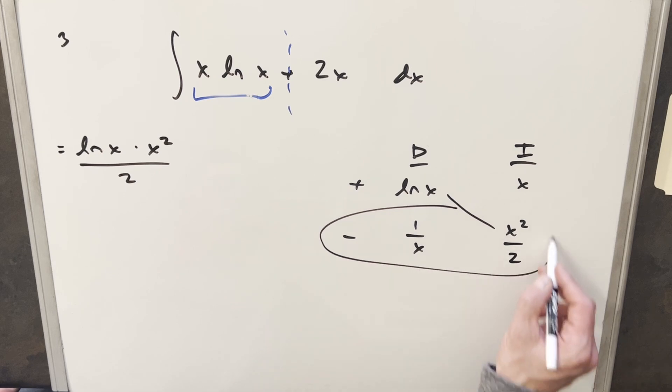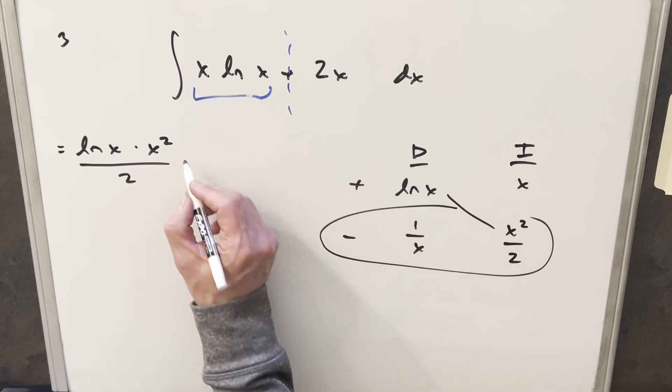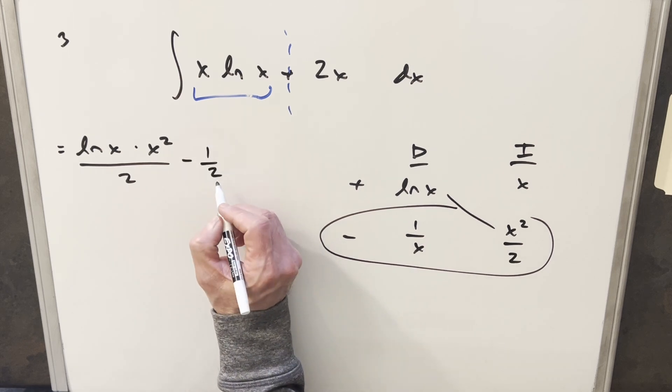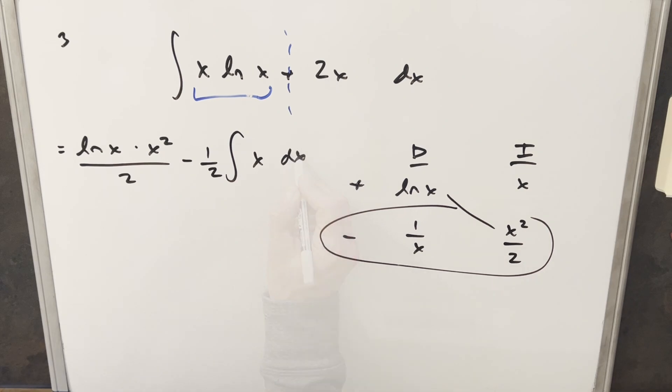And then this row here is going to be an integral, so when we multiply this together, x squared divided by x is going to give me an x. I'm going to write this as minus 1 half, and then we're just going to have the integral of x.